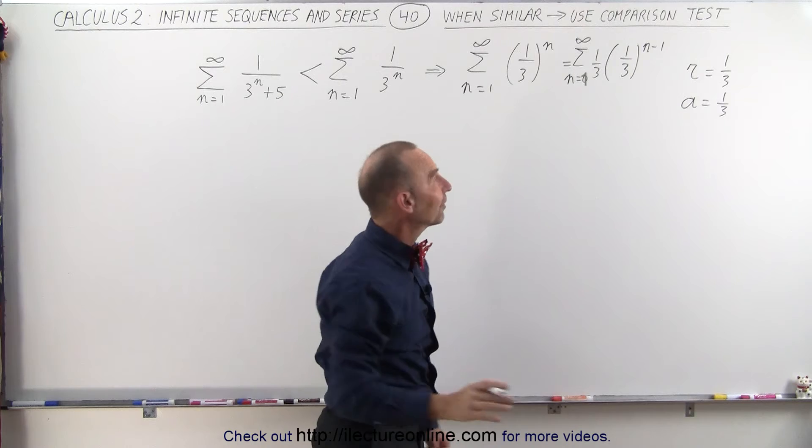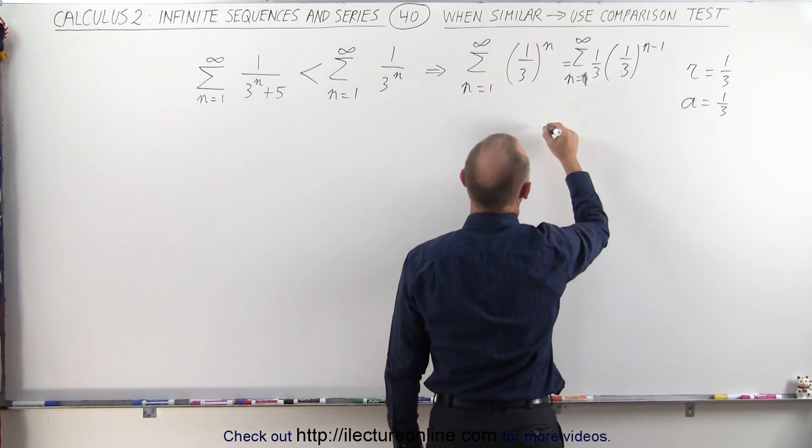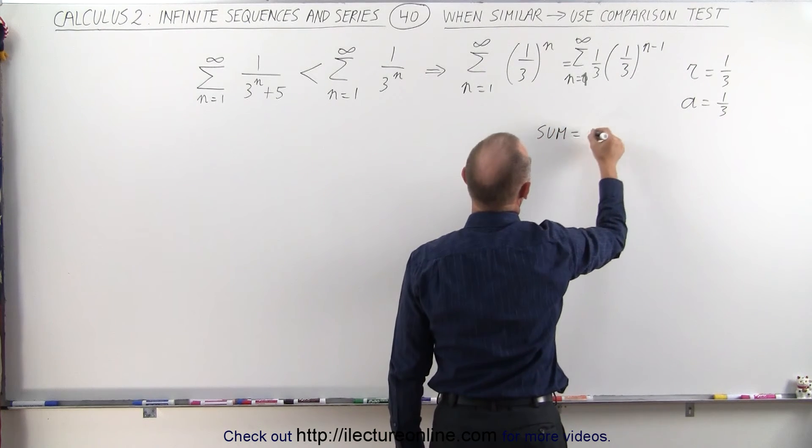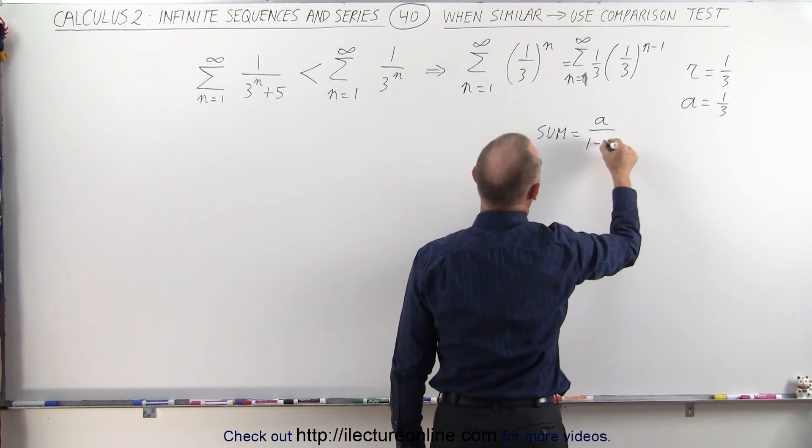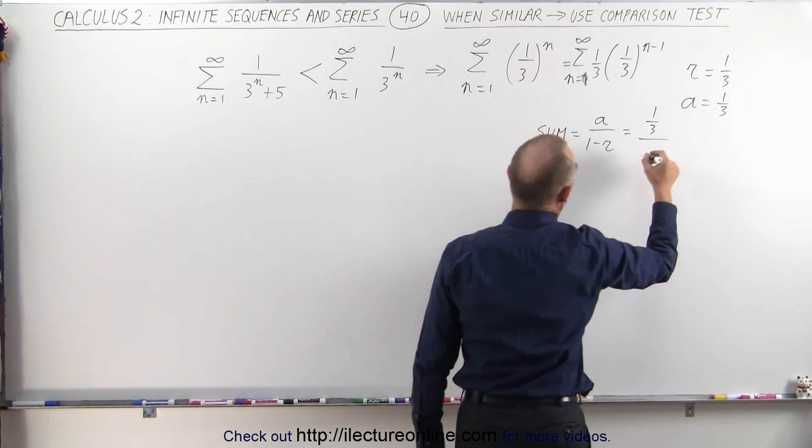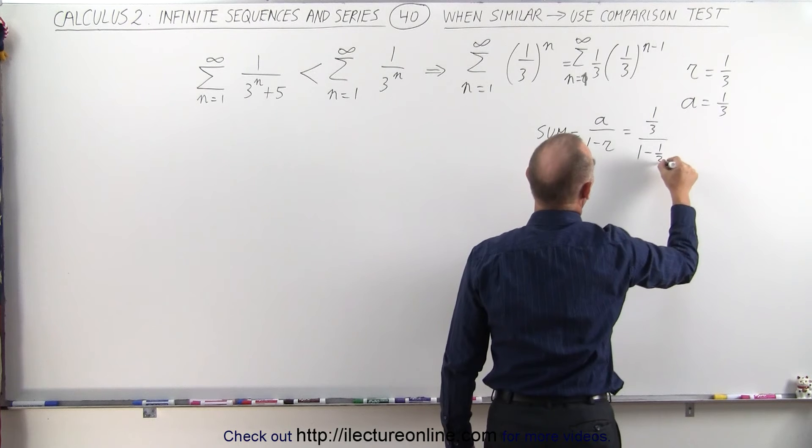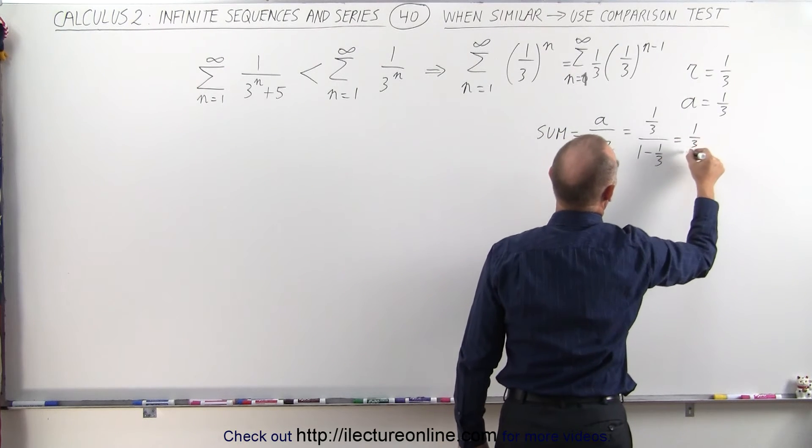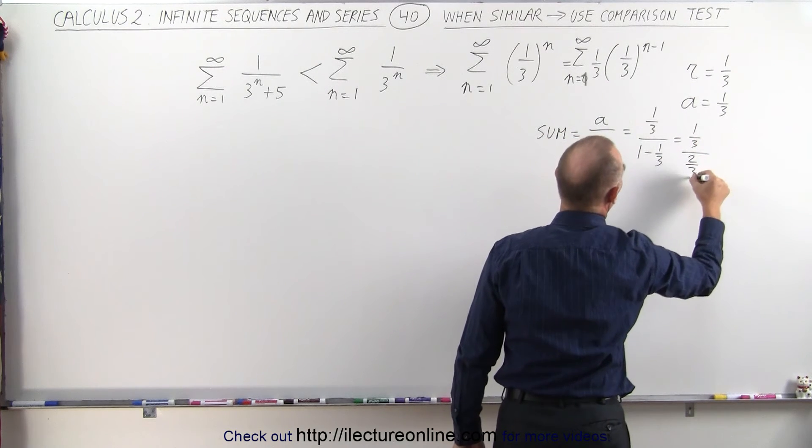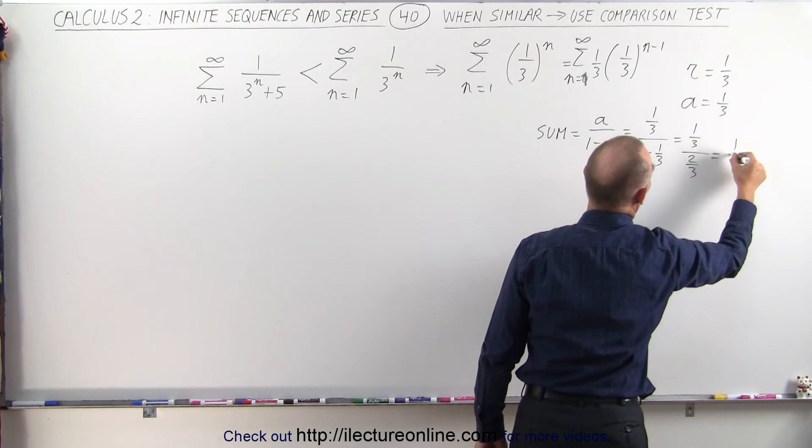And we can find the sum of that geometric series. So the sum is equal to a divided by 1 minus r, which is 1 third, divided by 1 minus 1 third, which is 1 third, divided by 2 thirds, which is equal to 1 half.